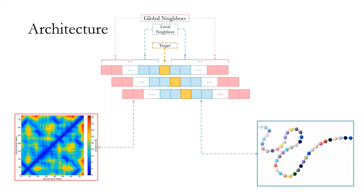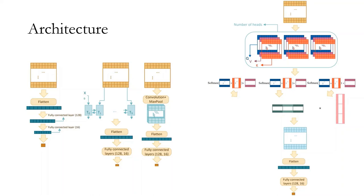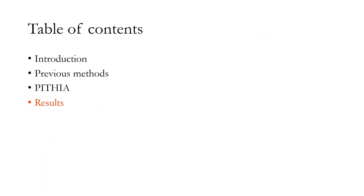For each target, we use a sliding window with information from the sequence, which we call local neighbors. We also use the contact map to find neighbors that are close to the target based on the 3D structure, which we call global neighbors. Finally, we created a 2D matrix for each target and use it as input to the final architecture. We studied different architectures like multiple dense layers, RNN, and CNN. Finally, we came up with this model that uses self-attention, which performs the best. The structure and architecture of our model can be seen on the right side of this slide.